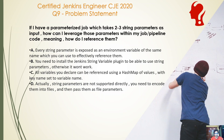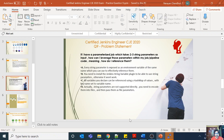Option A: every string parameter is exposed as an environment variable of the same name, which you can use to effectively reference them. Option B: install the Jenkins string variable plugin to be able to use the string parameter, otherwise it won't work. Option C: all variables you declare can be referenced using a hash map of values with the key name set to the variable name. Option D: string parameters are not supported directly — you need to encode them into files and then pass them as file parameters.